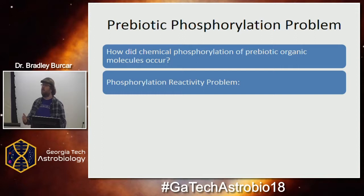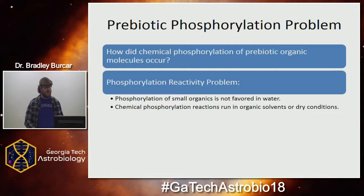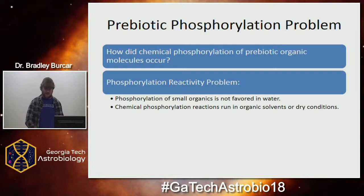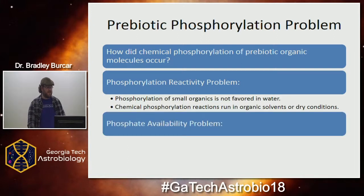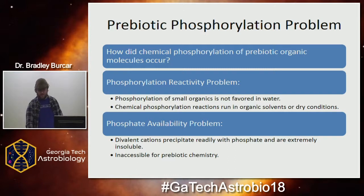But this is fraught with some problems that have haunted the astrobiology community for the past 50 to 60 years. One of the first issues is how do you even react it with early molecules — how do you get phosphate incorporated? These reactions are not favored in water at all; it drives off water, and it's very hard to do in a water-based reaction. Modern biochemists use organic solvents and dry conditions to add the phosphorylation, which is problematic because you can view the early Earth just covered in water. And another major problem is the phosphate availability issue — a lot of the phosphate we see on modern Earth is bound in insoluble species with divalent cations, traditionally considered extremely inaccessible for prebiotic chemistry.